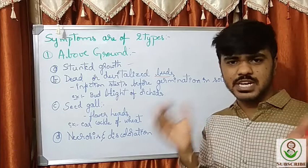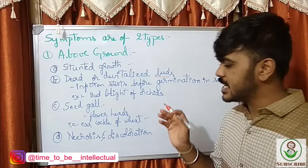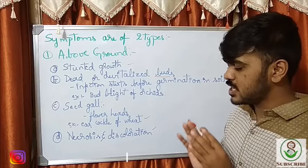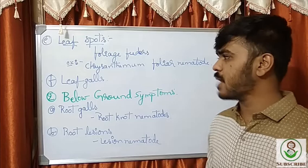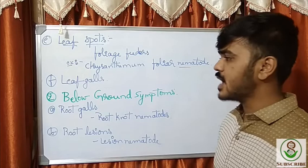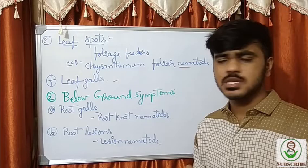Then comes seed gall, which especially occurs in the flower heads — the best example is ear cockle in wheat. Next comes necrosis and discoloration, also a very important symptom as it leads to death of the cells. Then there are leaf spots, exhibited by foliage feeders — the example is the chrysanthemum foliar nematode. They also exhibit leaf galls. These are the above-ground symptoms.